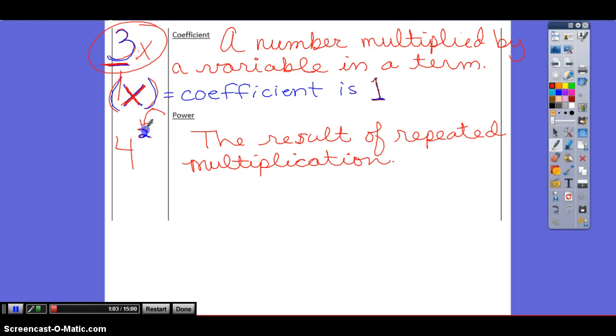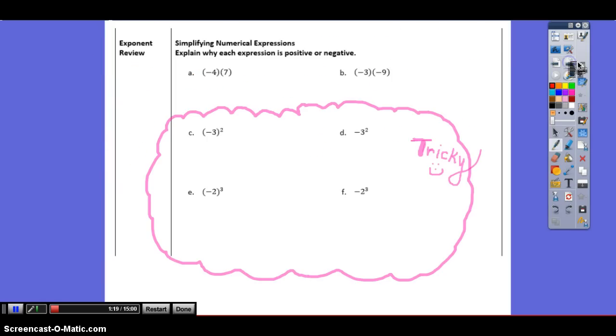And again, we just said the exponent is also known as the power. We could say this 4 to the second power. We could say this 4 to the power of 2. Or what's another way we could say this? 4 squared. Nice memory.